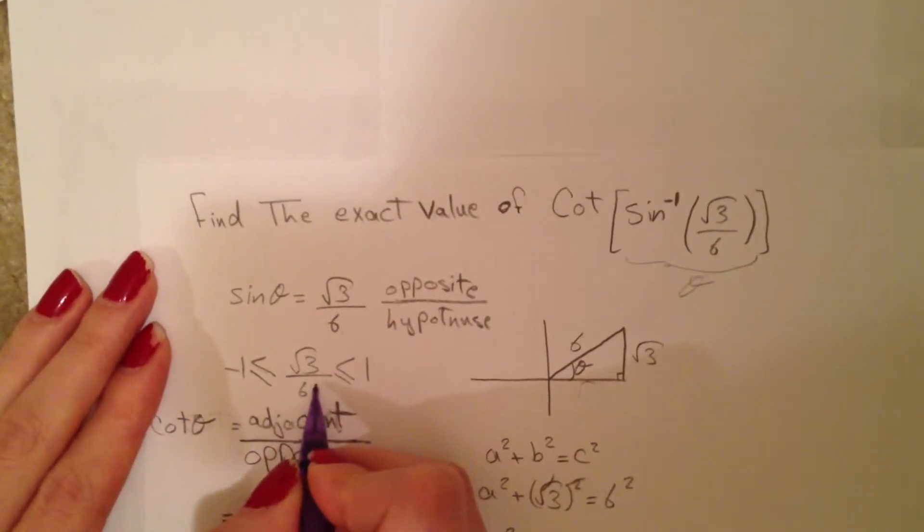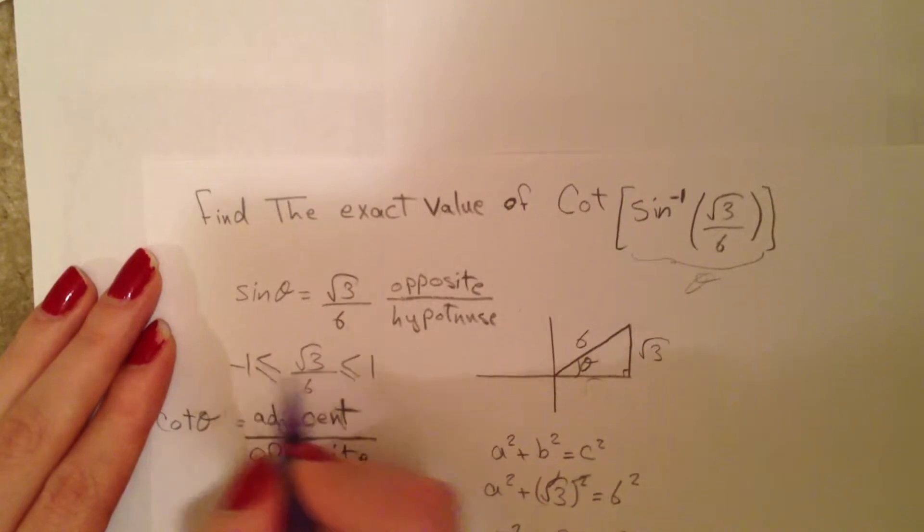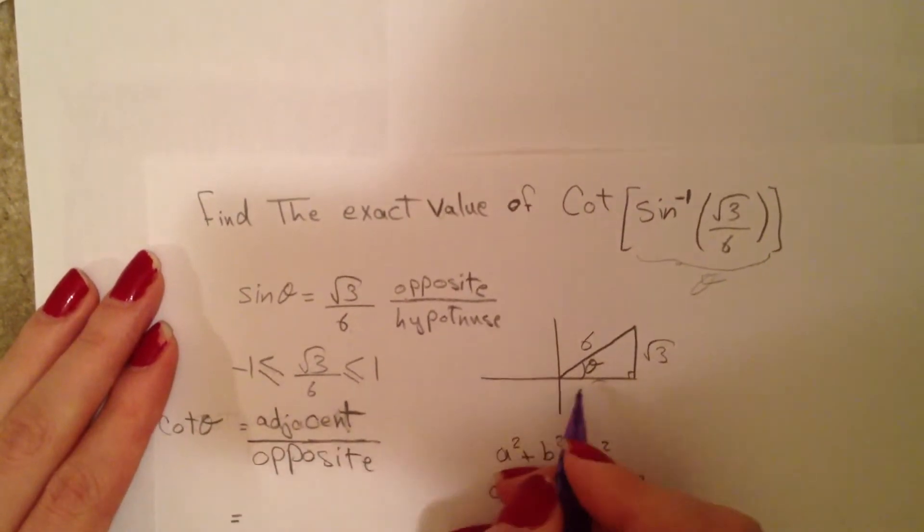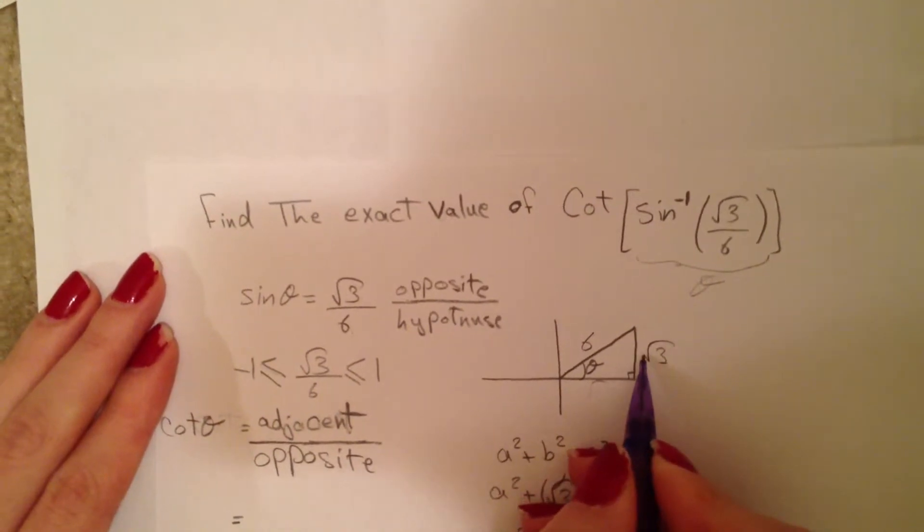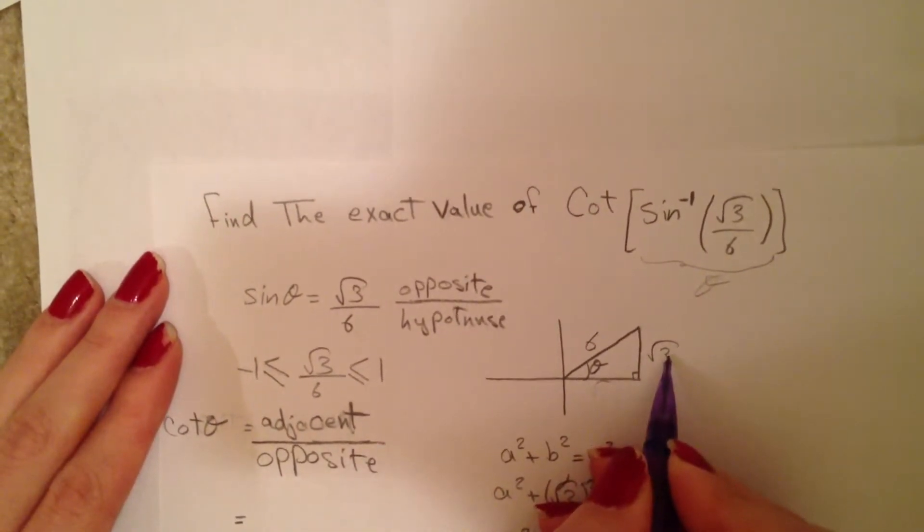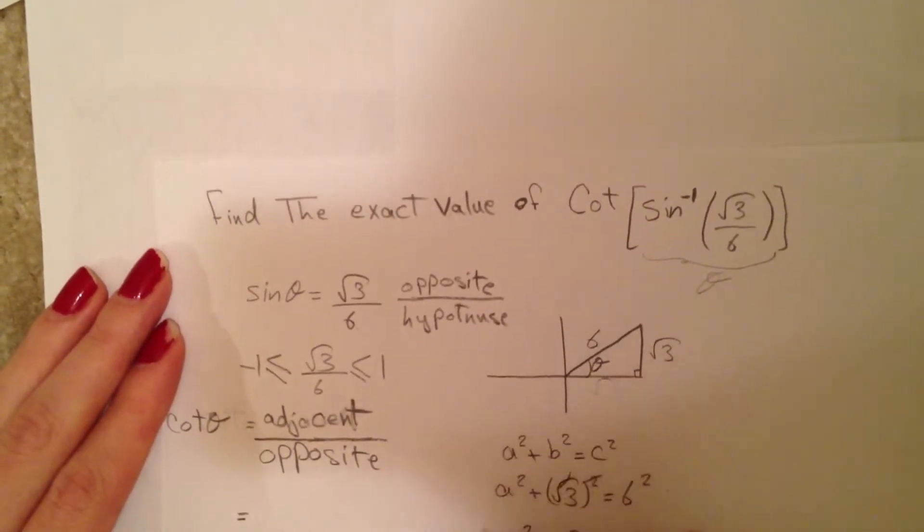√3/6 should be between -1 and 1. Here is our drawing. We have θ with √3 for the opposite side and 6 for the hypotenuse.